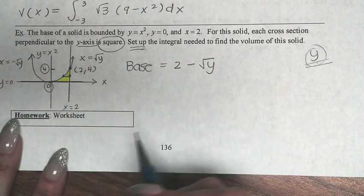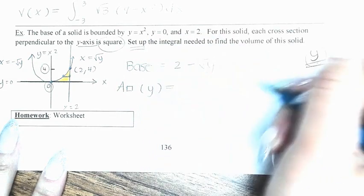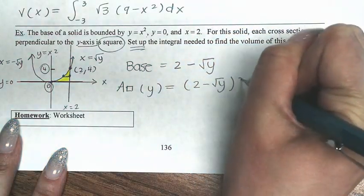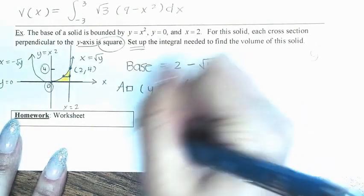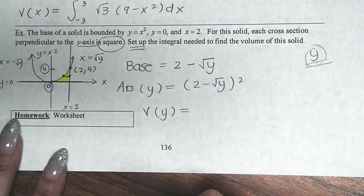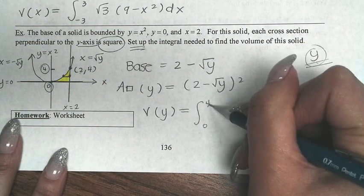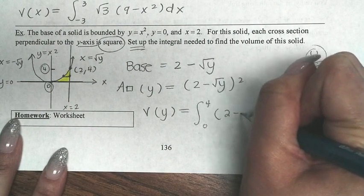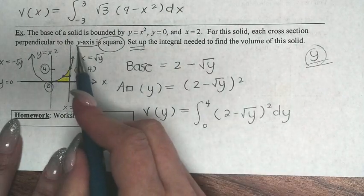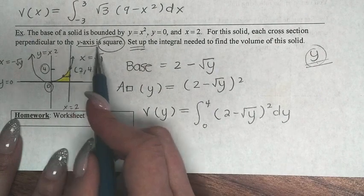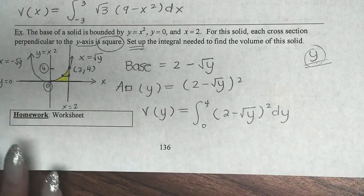The area of a square based on y is side squared, so A(y) = (2 − √y)². To find the volume, we set up the integral with respect to y: from 0 to 4 of (2 − √y)² dy. Since the cross sections are perpendicular to the y-axis, everything — including the limits of integration — is in terms of y. You only need to set it up, so we are done. I hope you find this video helpful. Bye!